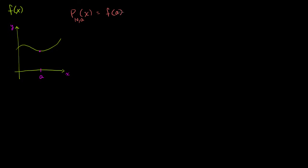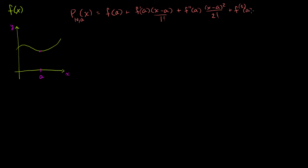The Taylor polynomial is going to be f of a, plus f prime of a times (x minus a), plus f double-prime of a times (x minus a) squared over 2 factorial, plus the third derivative of f at a times (x minus a) to the third power over 3 factorial, and you keep going all the way to the nth derivative of f evaluated at a times (x minus a) to the n over n factorial.